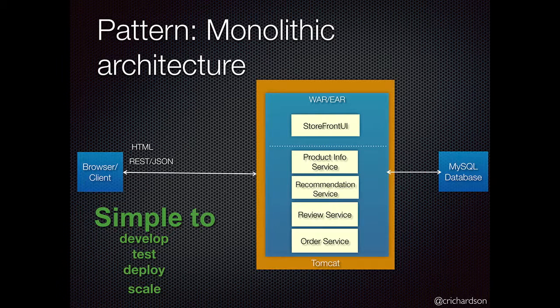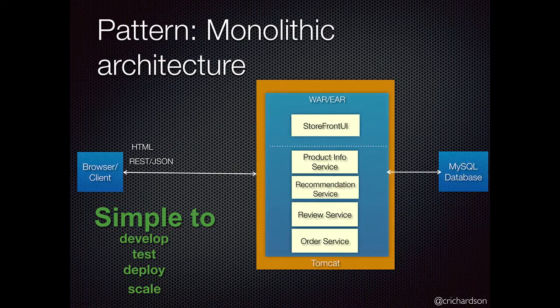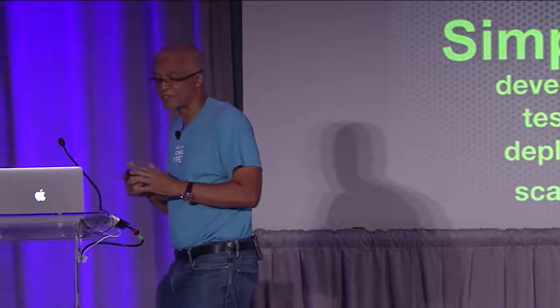For the most part, this approach is pretty simple. Our tooling is oriented around developing a web application. These applications are simple to test — in the Spring Boot world, a few annotations on your test class and it automatically launches your web app for REST or Selenium testing. Simple to deploy: copy the war file onto a server running Tomcat. Simple to scale: run multiple copies behind a load balancer. A totally common example — most applications I've built over the years had that architecture, including the original Cloud Foundry.